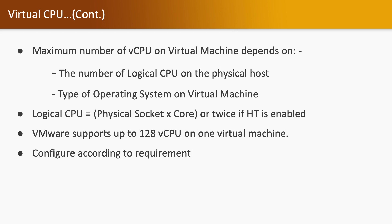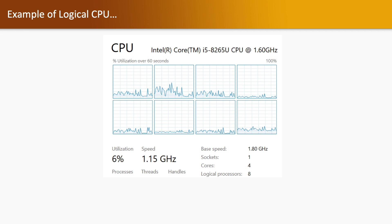It also depends on the type of operating system installed on the virtual machine. How do we calculate logical CPU? We have physical sockets and cores available on our server. Logical CPU equals physical sockets multiplied by cores. And if hyper-threading is enabled, the number of logical CPUs we get is doubled. For example, if a virtual machine has one socket and four cores, we have four total logical processors available. But with hyper-threading enabled, that value is doubled to eight. Specific to VMware, it supports up to 120 virtual CPUs on one virtual machine, and we can configure according to requirement and performance metrics.